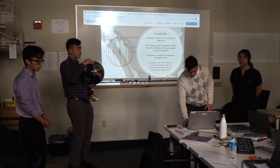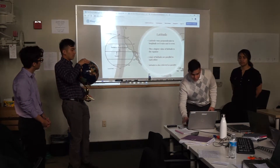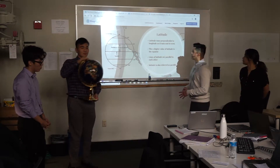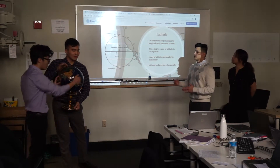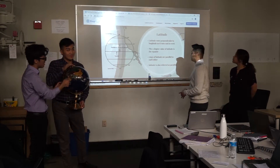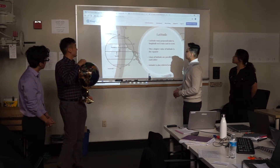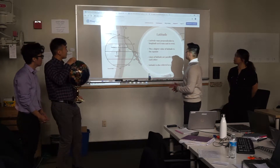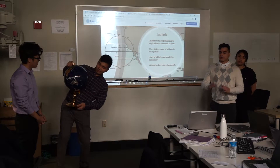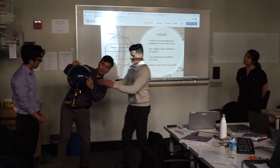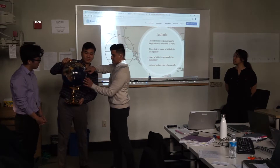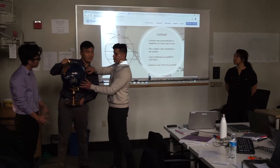So now we're going to talk about latitude. Latitude runs perpendicular from the longitude, so it runs from west to east. Also, the zero degree value of latitude is basically the equator line. As you can see, the red line here is in the middle. This red line goes all the way through — this is called the equator line.